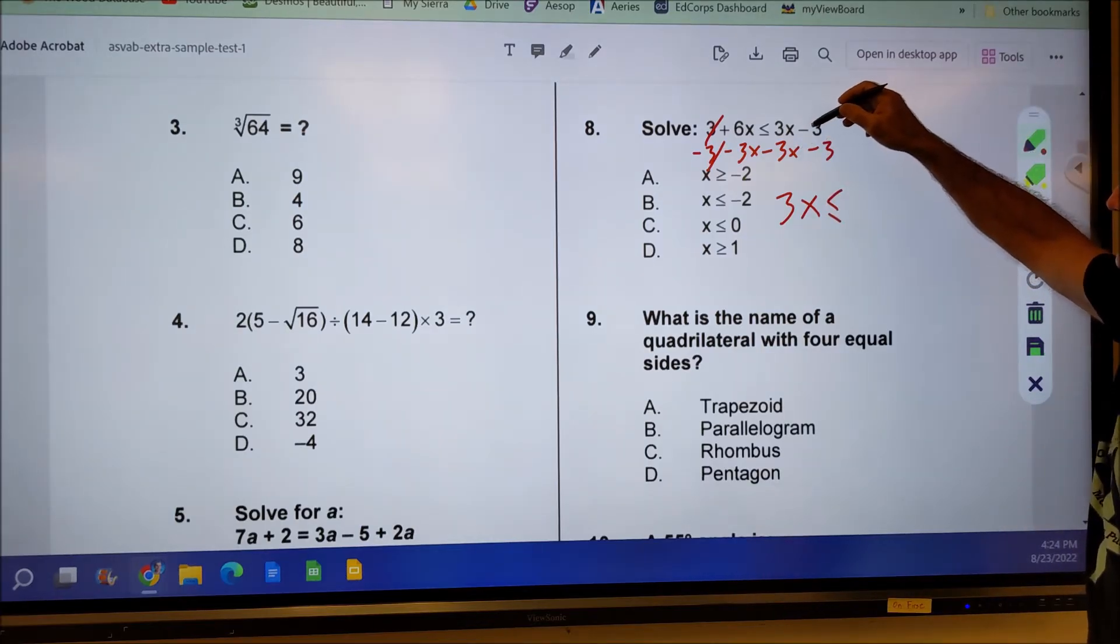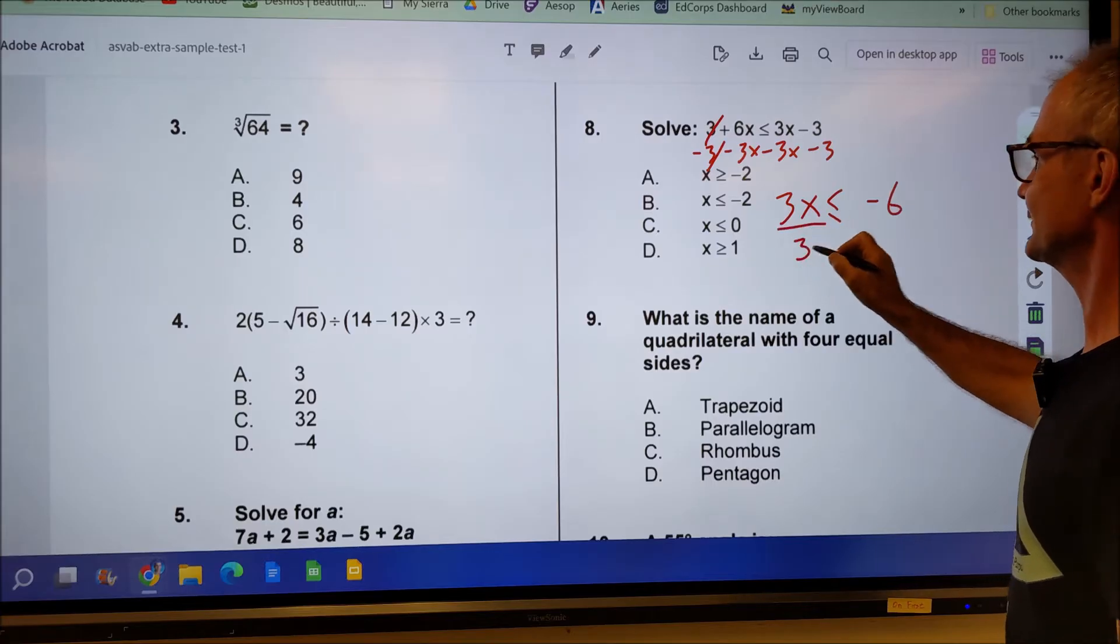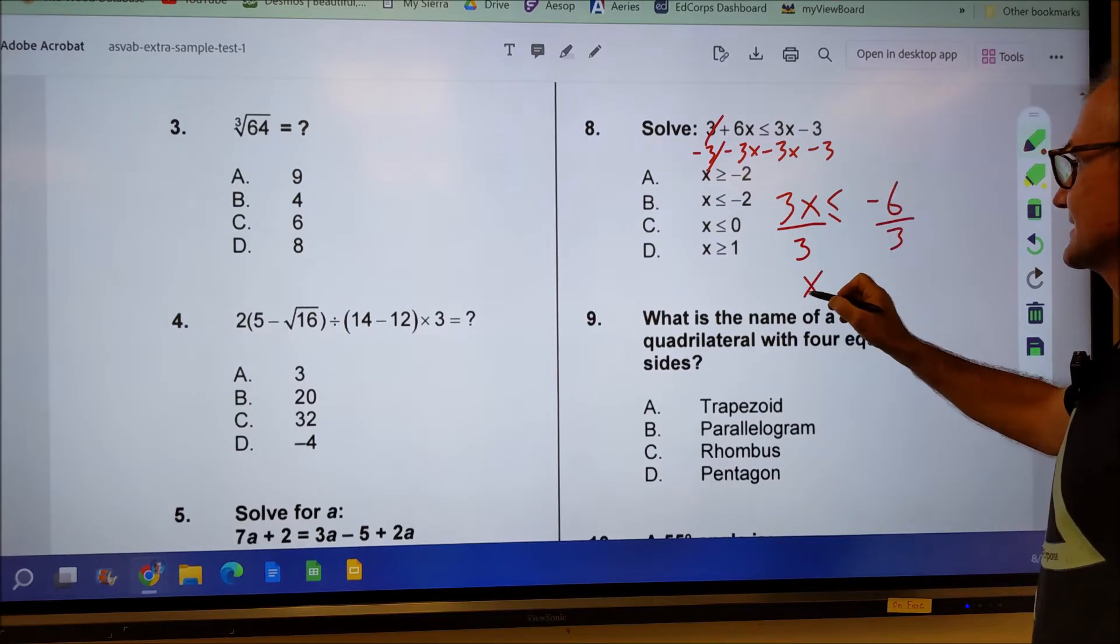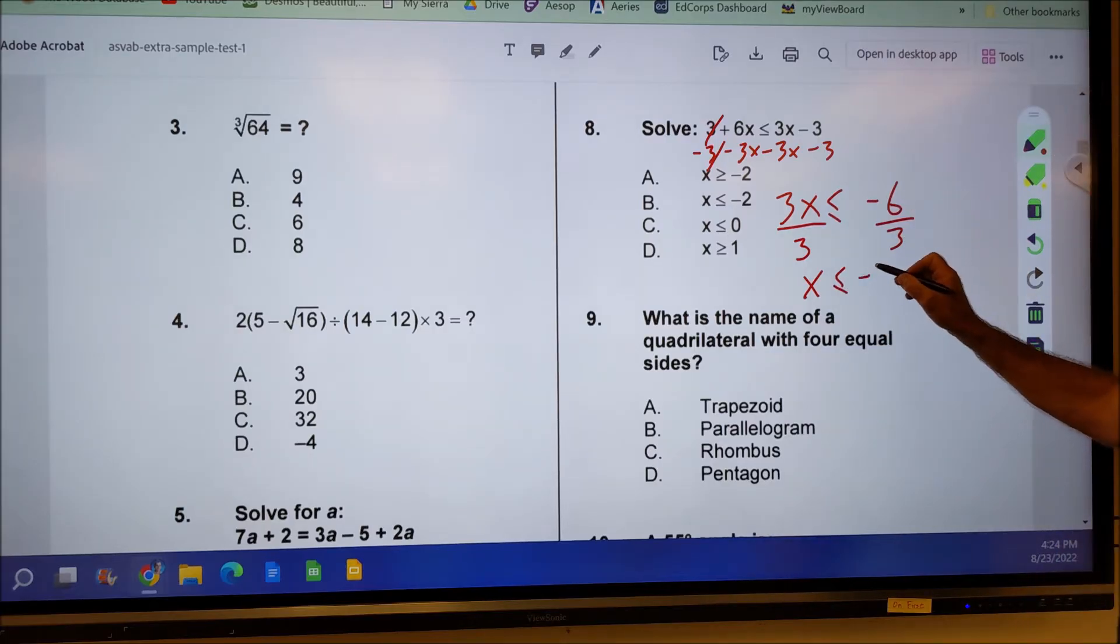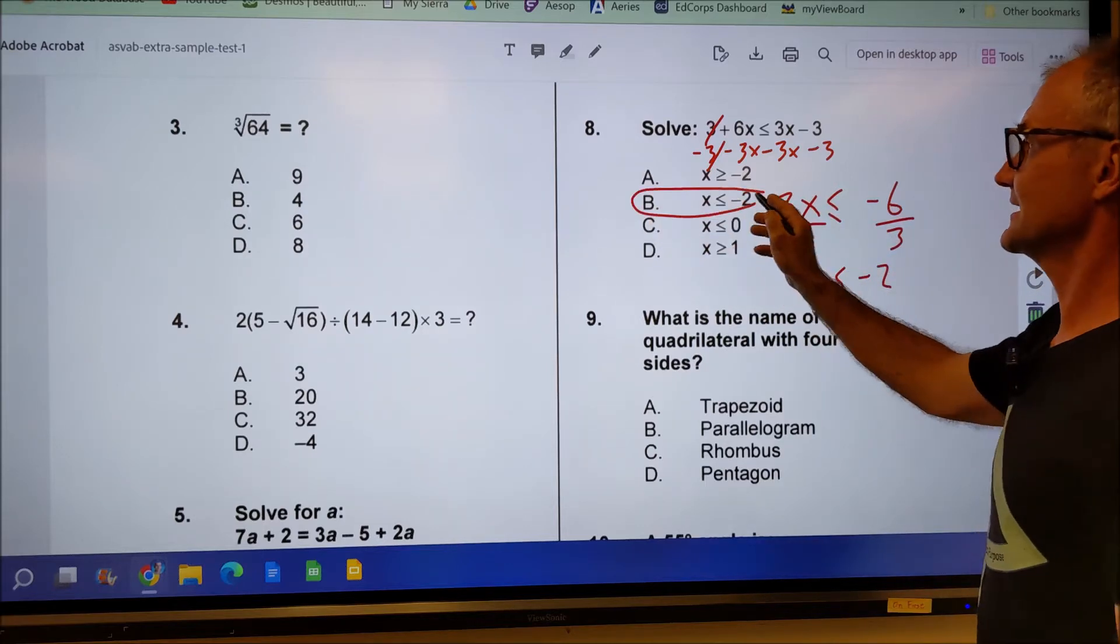I have that less than or equal sign. 3X minus 3X cancels. And then negative three minus negative three is negative six. I divide both sides by a three. I am not dividing by a negative. So I have X is less than or equal a negative divided by a positive negative two. X is less than or equal negative two. Answer B.